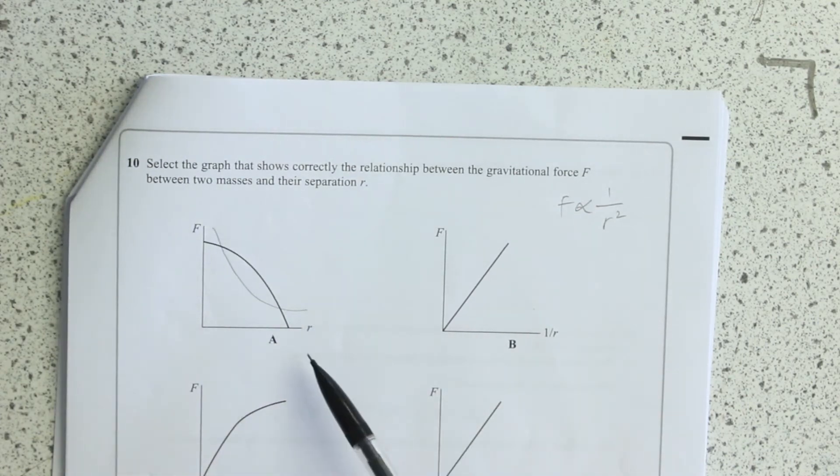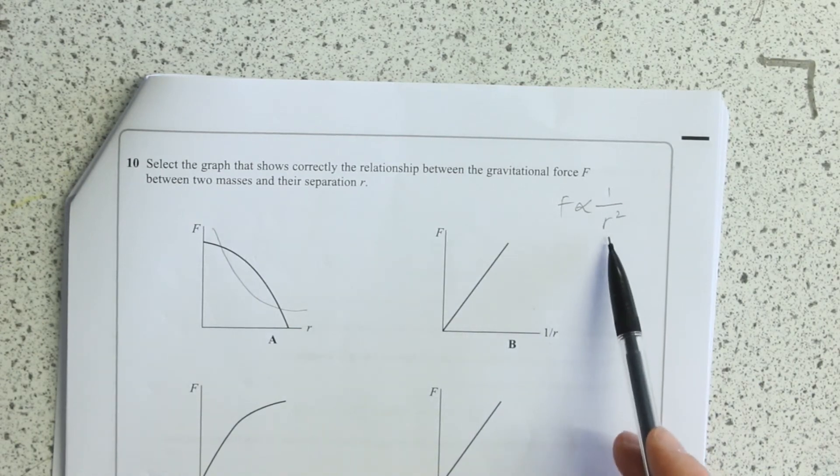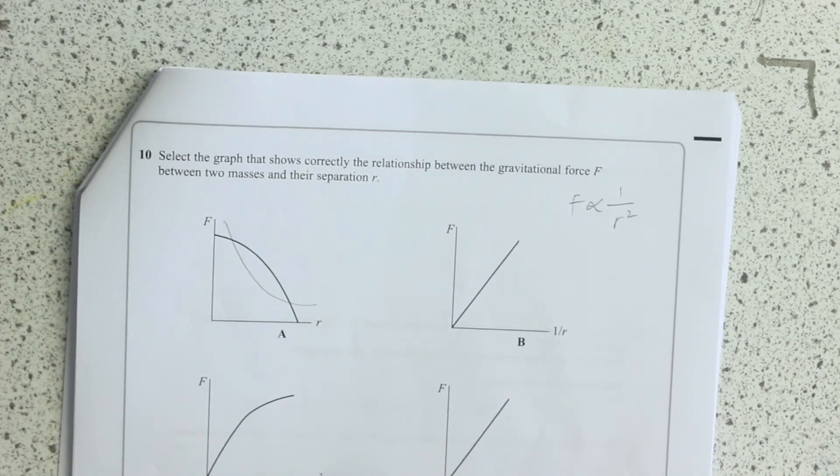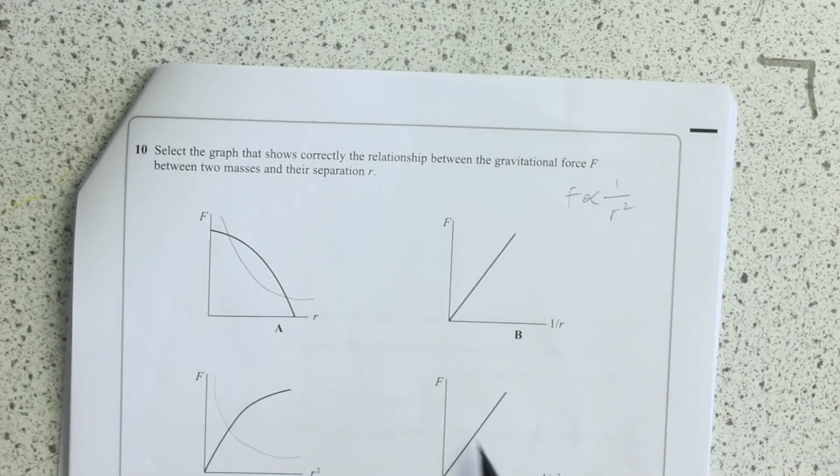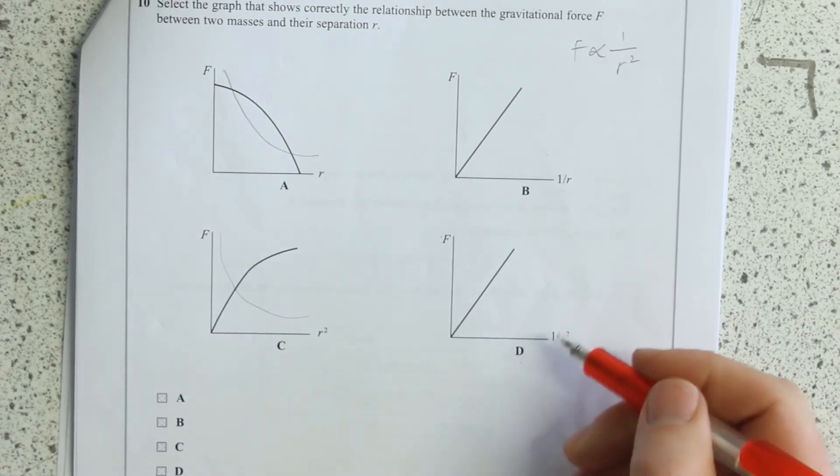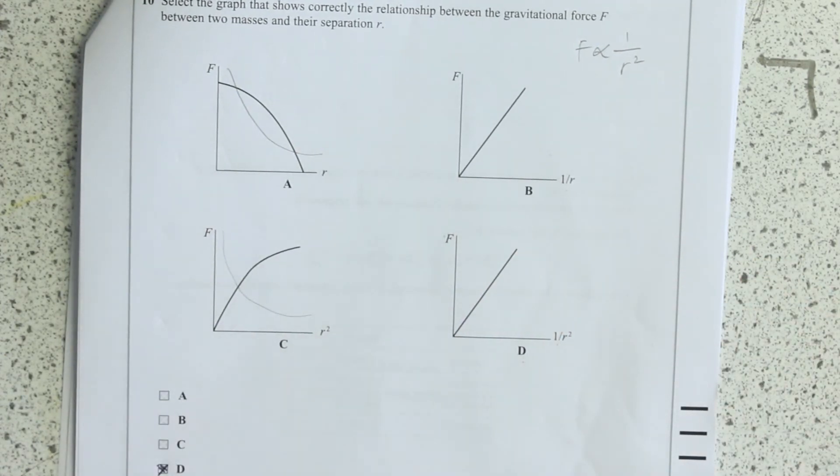It would look like that, definitely like that. This is F, 1 over R. Well no, they're not inversely proportional, it's inverse square, it's F R squared. Okay, so this would still be an inverse curve. And then there's this one because you're plotting F against 1 over R, so it is this one - they're proportional to one another.